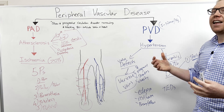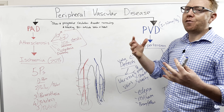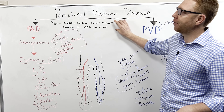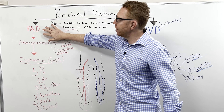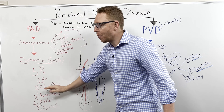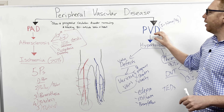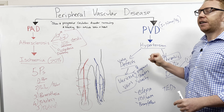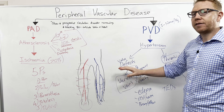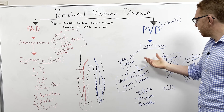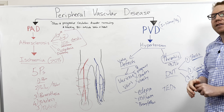That is an overview of peripheral vascular disease. Hopefully you now understand the definition, the two subtypes, what causes PAD, the five Ps, how they're diagnosed and managed, and for PVD — the two main subtypes: valve defects causing varicose veins and chronic venous insufficiency, and thrombophlebitis most commonly manifesting as DVTs, their diagnosis and management.